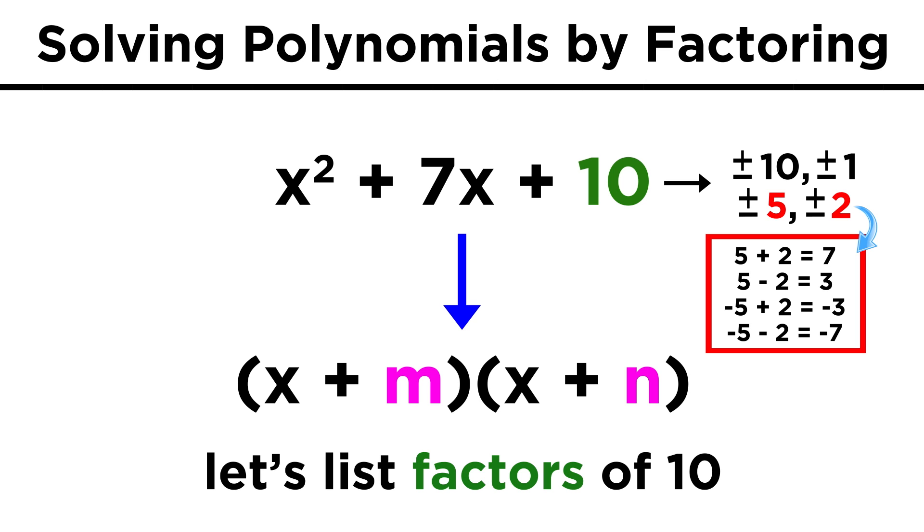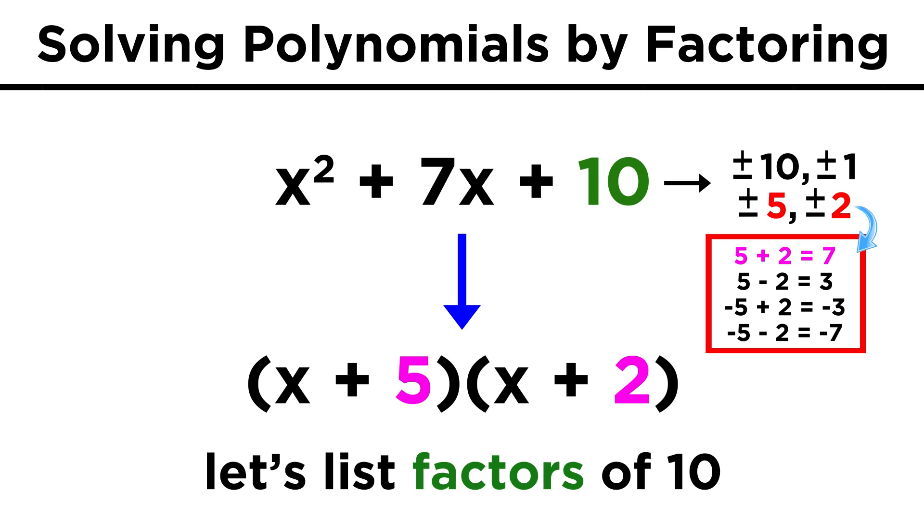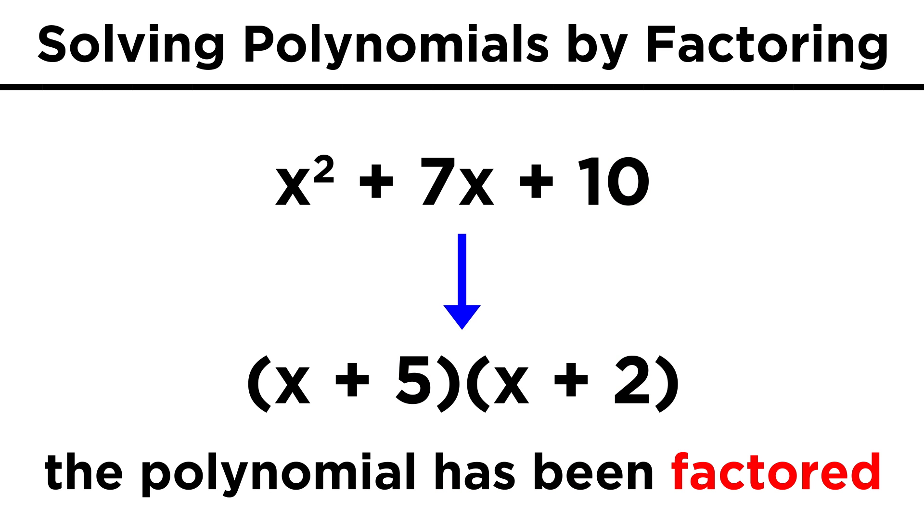Five and two will work, however, since five plus two is seven, so that means we can put positive five here and positive two here, and we have successfully factored the polynomial.